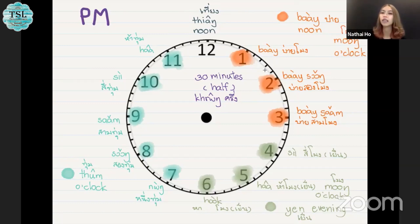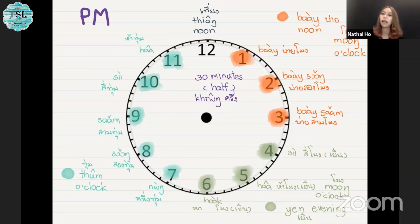1 PM — how to say in Thai. This one is a little special. We say บายโมง, บายโมง. And the next one, 2 PM: บายสองโมง, บายสองโมง. 3 PM: we say บายสามโมง, บายสามโมง.